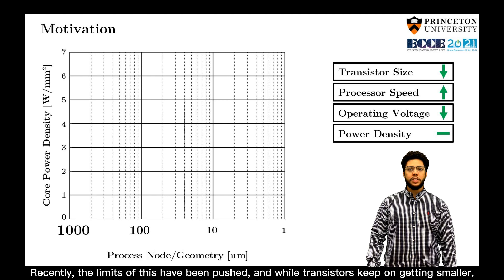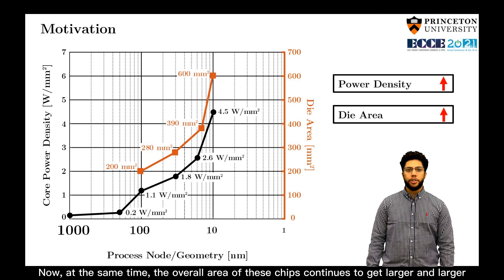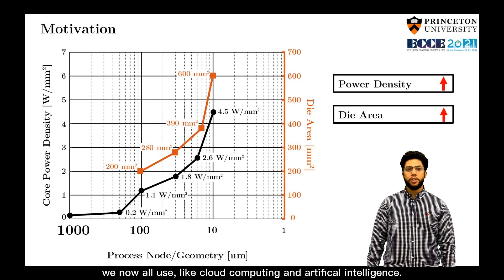Recently, the limits of this have been pushed, and while transistors keep on getting smaller, the power densities of these chips have started to increase very rapidly. Now at the same time, the overall area of these chips continues to get larger and larger to support the computationally expensive processes that are the backbone of services that we now all use, like cloud computing and artificial intelligence.